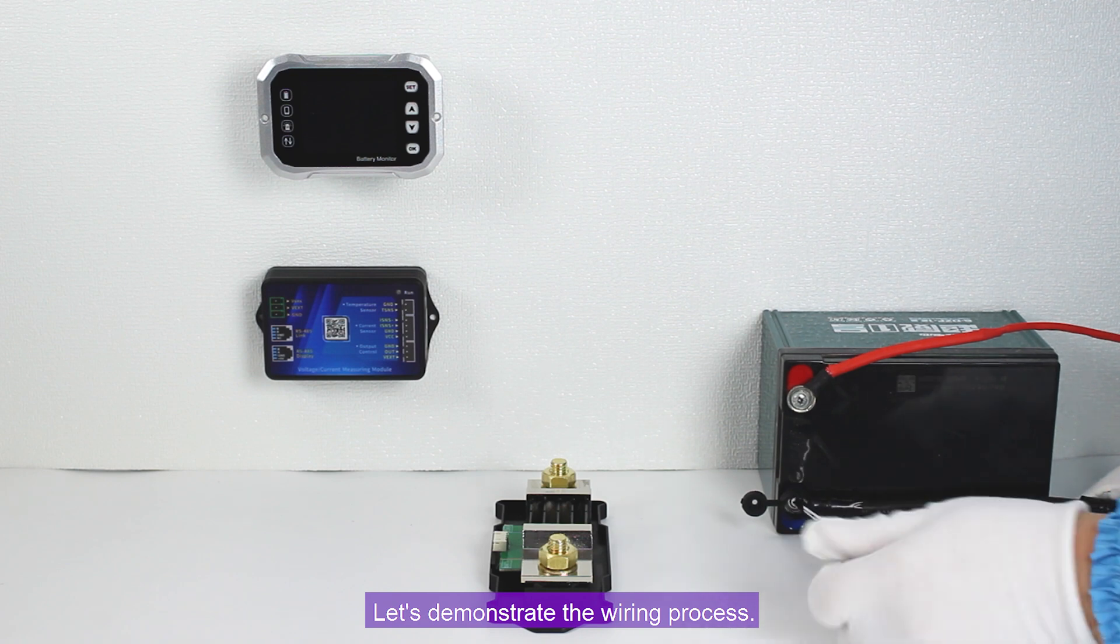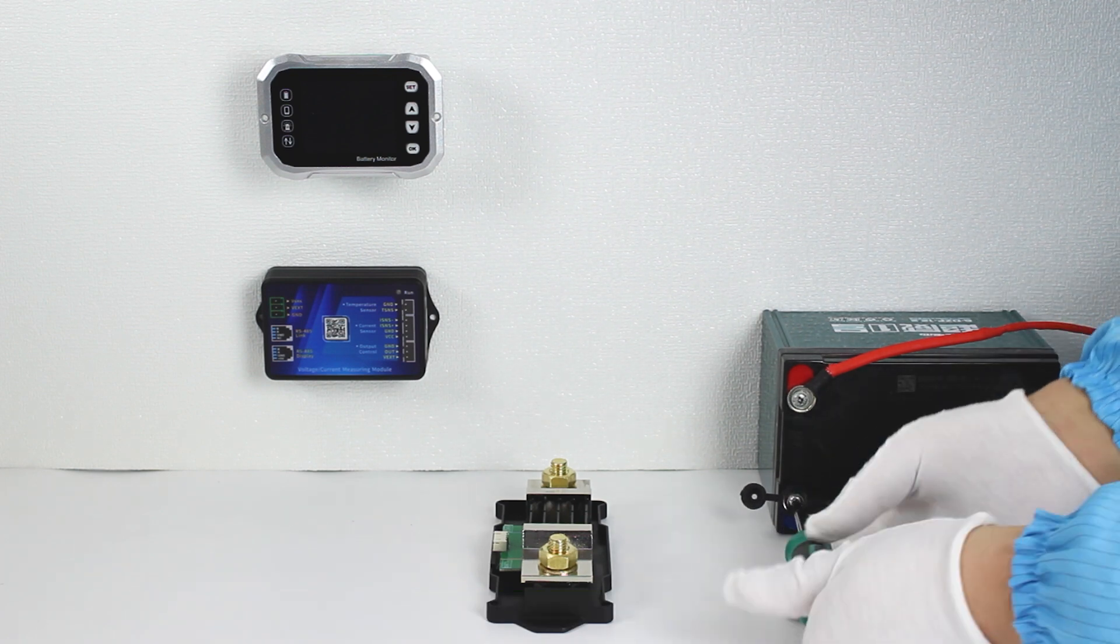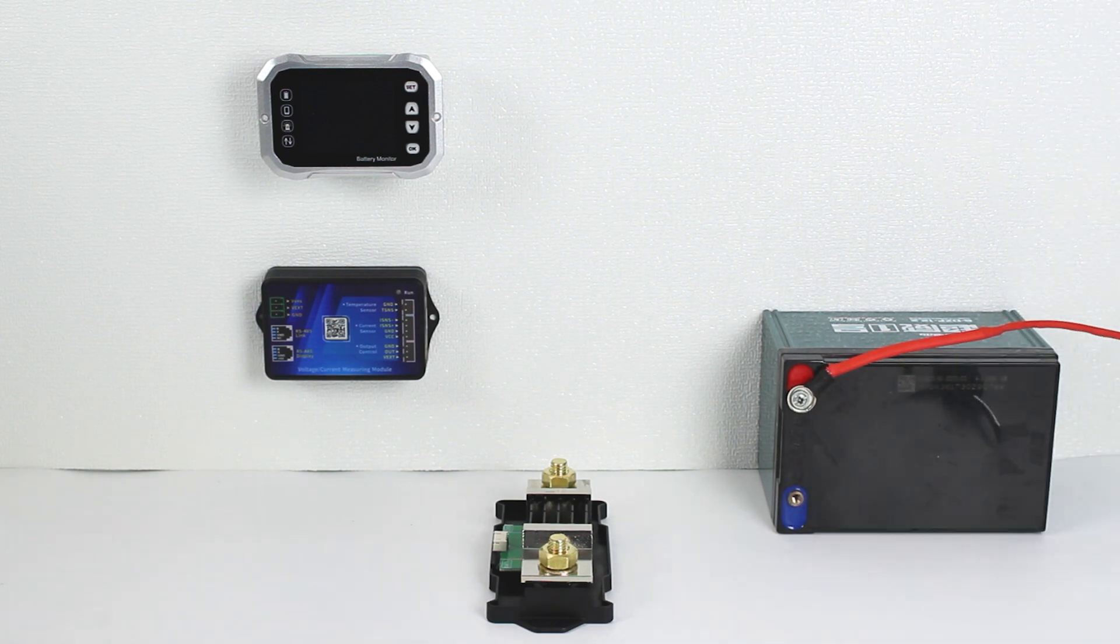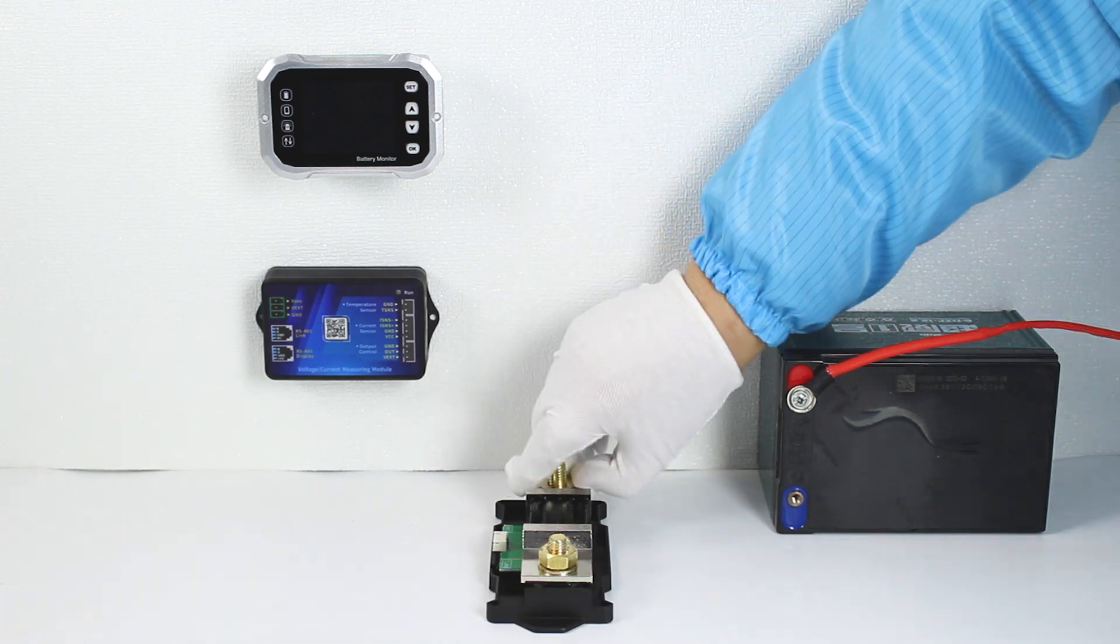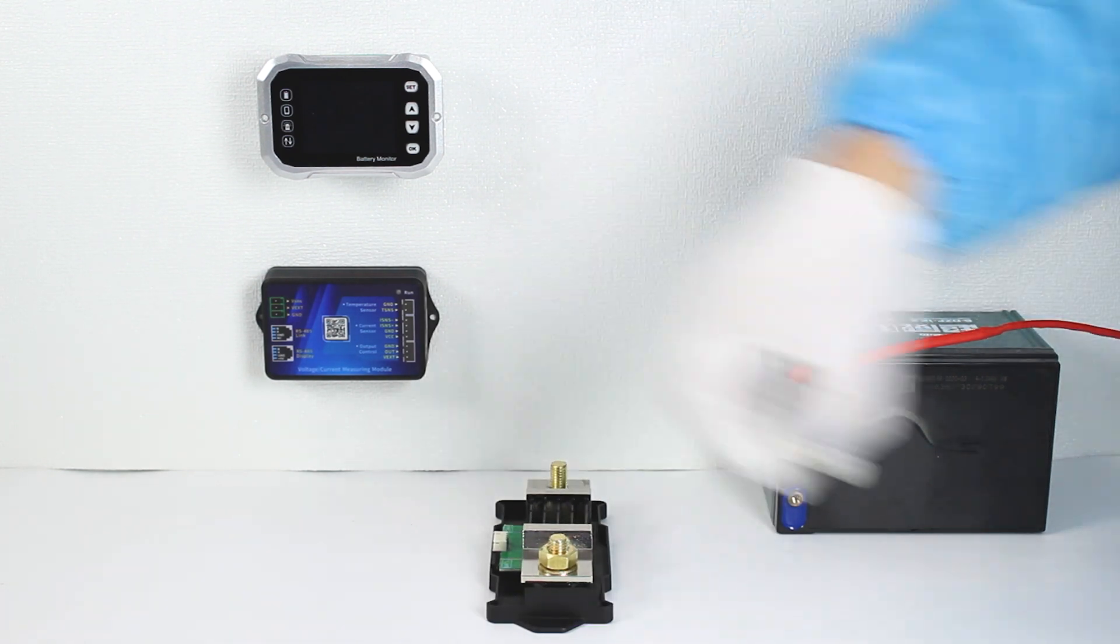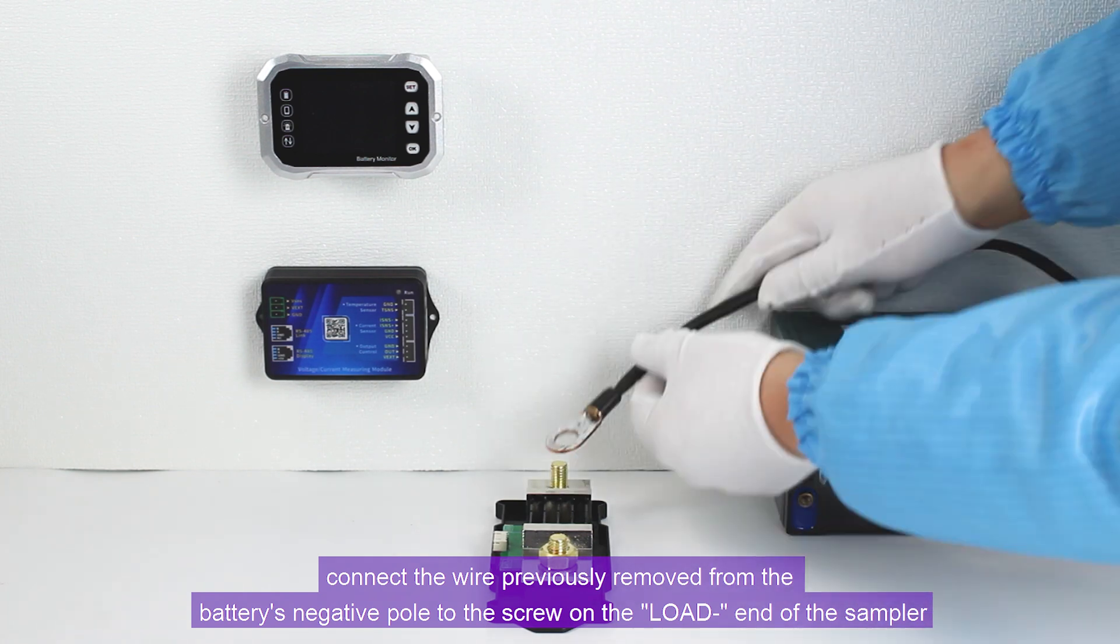Let's demonstrate the wiring process. Remove the wire from the negative pole of the battery. Loosen the screw on the LOAD end of the sampler with the wrench. Connect the wire previously removed from the battery's negative pole to the screw on the LOAD end of the sampler.